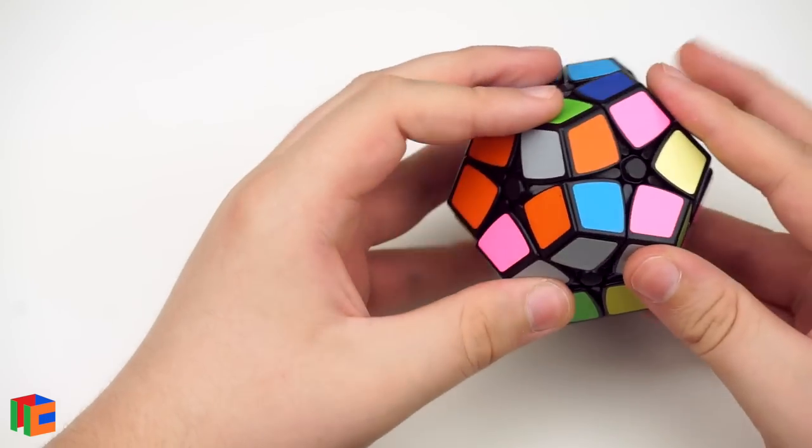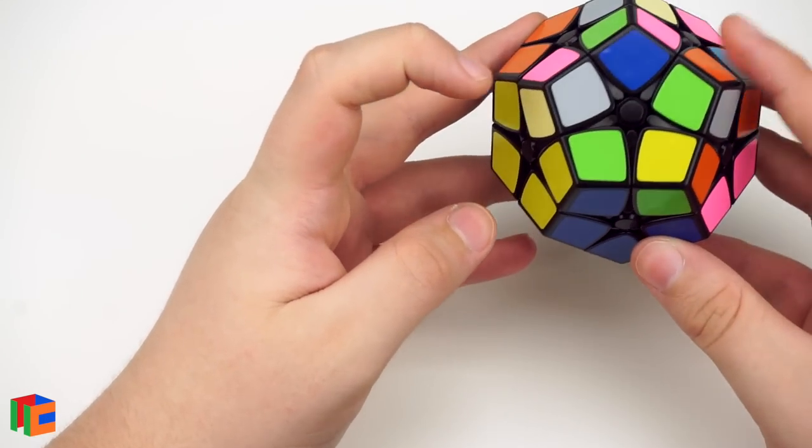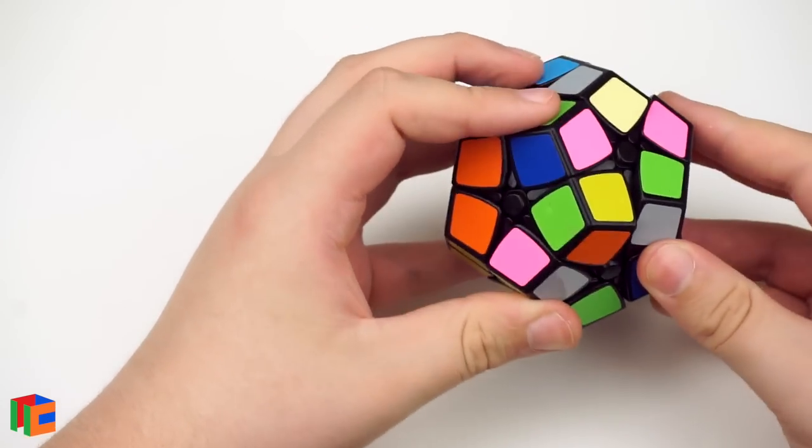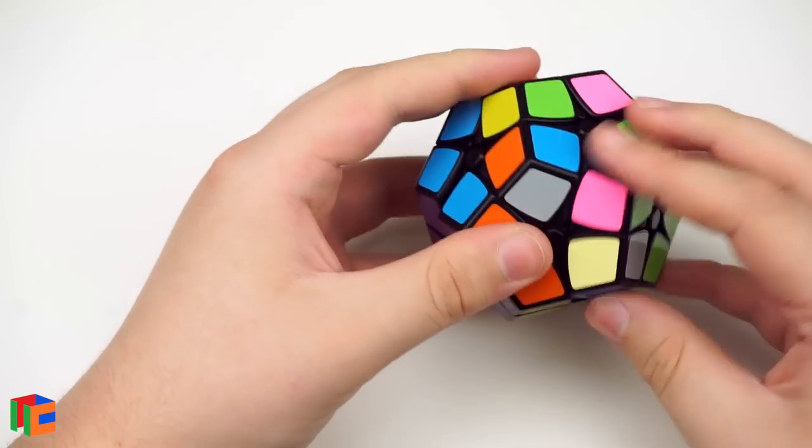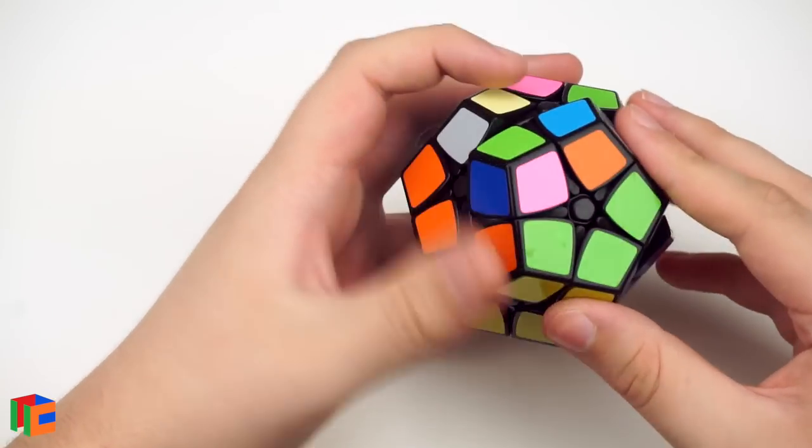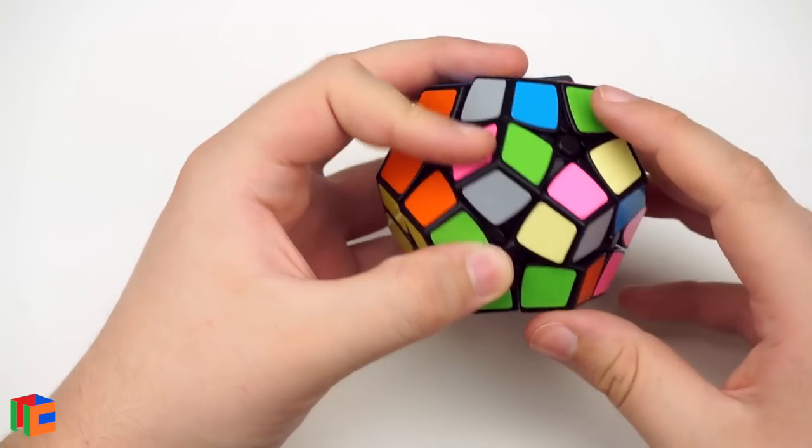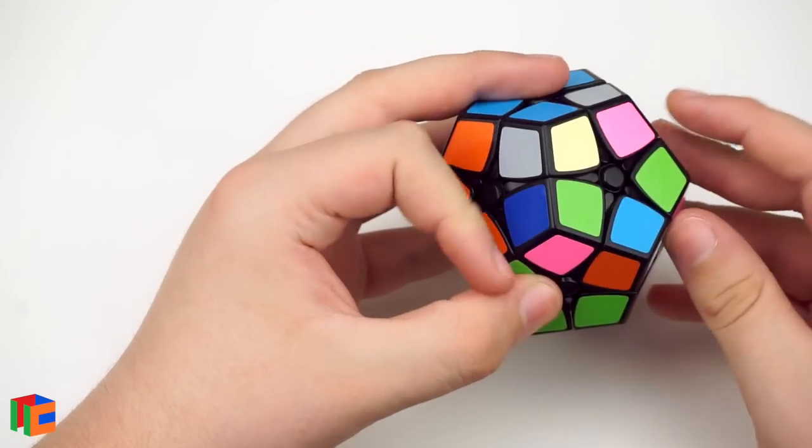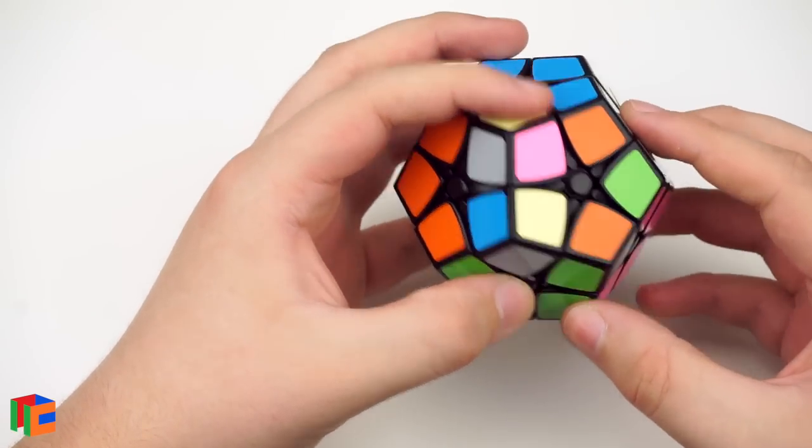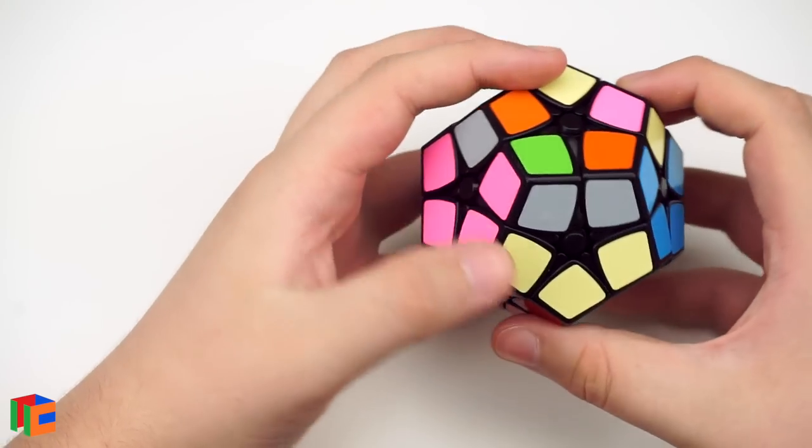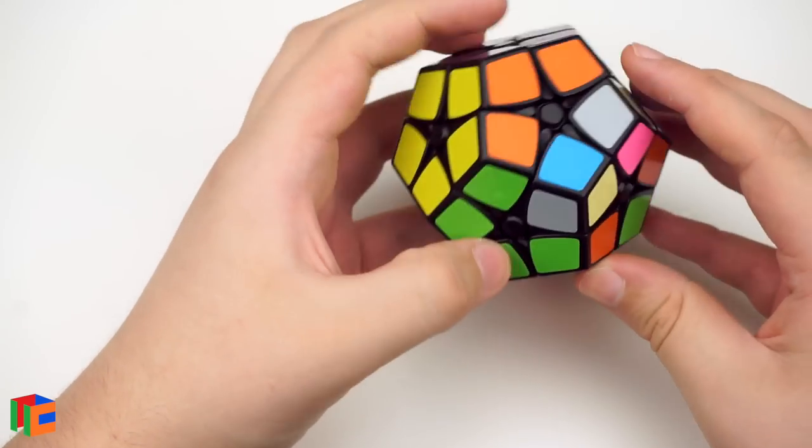And then the one that goes here will be this one. All right, almost there. There we go. So this one goes here. The piece that will go here is right over here. So let's go ahead and rotate that up. Turn it in. The turning is pretty okay. It's not fantastic, but I'm sure if I lubricated it, it would become a lot better. All right, so there we go. Now we're on last layer.